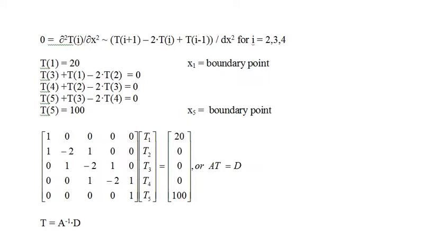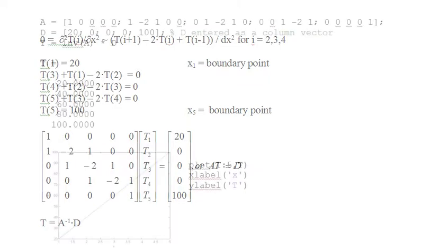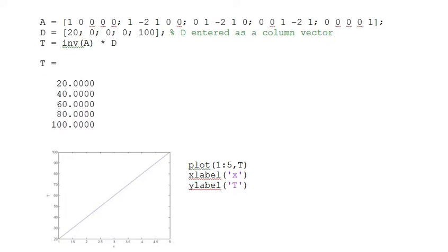So we have 5 linear equations and 5 unknowns, and we can use standard linear algebra techniques to solve them. We do this by constructing the coefficient array A and the constant array D. With the array T representing the unknown temperatures, we have, using matrix notation, A times T equals D. This equation is solved for T by multiplying both sides by A inverse, giving T equals A inverse times D. Here is the MATLAB code for setting up the arrays. Note that D is entered as a column vector so that the matrix multiplication will work, and we also have instructions to plot the results.